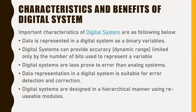Characteristics of digital systems: data is represented in a digital system as binary variables. Binary variables are the language of computers, consisting of zeros and ones, and this is the only language a computer can understand. Digital systems can also provide accuracy over a dynamic range limited only by the number of bits used to represent a variable.